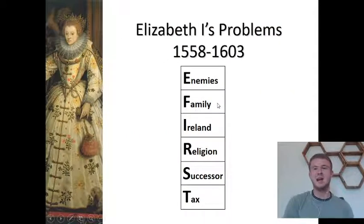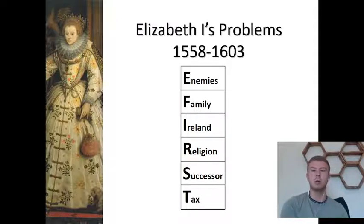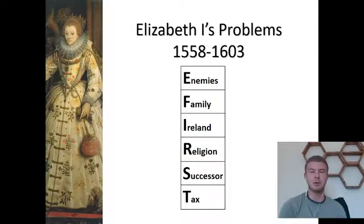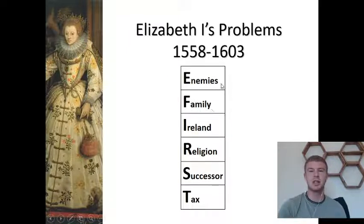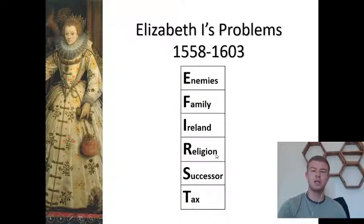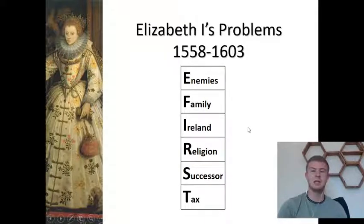Elizabeth I faced six problems throughout her reign from 1558 to 1603. Helpfully, we've been able to put them into an acronym — and as it's Elizabeth I, it is E-FIRST. Her six problems are: Enemies, Family, Island, Religion, Successor, and Tax. We'll go through each of those individually.